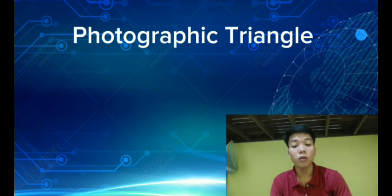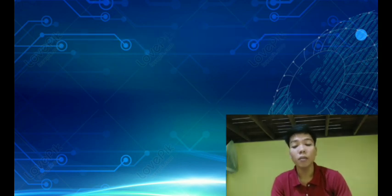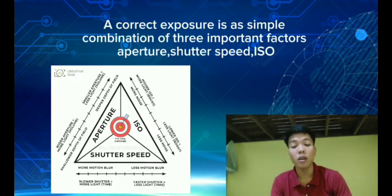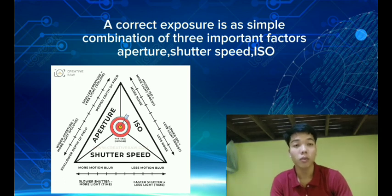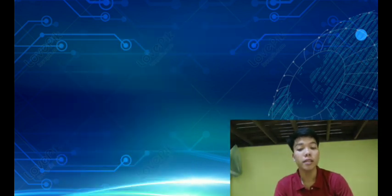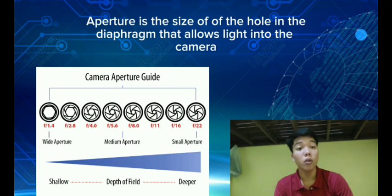Now let's talk about the photographic triangle. Correct exposure is a simple combination of three important factors: aperture, shutter speed, and ISO. Aperture is the size of the hole in the diaphragm that allows light into the camera.